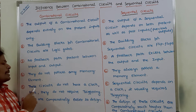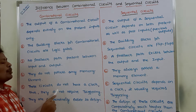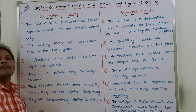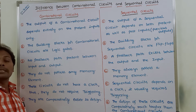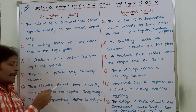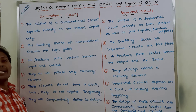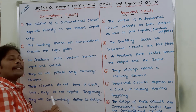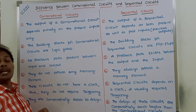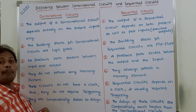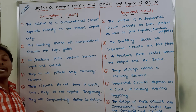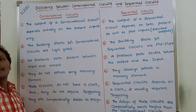Fifth point: combinational circuits do not have a clock and do not require any triggering. Whereas sequential circuits must have a clock — a clock is required to drive the flip-flops in sequential circuits, and because of that, sequential circuits require triggering whenever a clock is present.